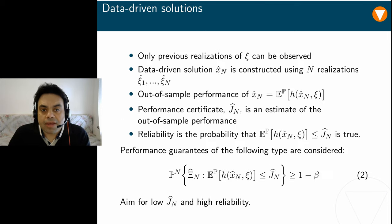In practice, this distribution P may only be indirectly observable through independent training sample ξ̂₁ to ξ̂ₙ. A data-driven solution for such a problem is a feasible decision x̂ₙ constructed from the training data through some form of approximation of the true probability distribution P. In addition, we also aim to construct a data-driven certificate Ĵₙ that is a safe estimate of the true expected loss, which is also known as the out-of-sample performance.